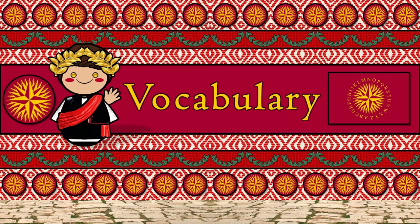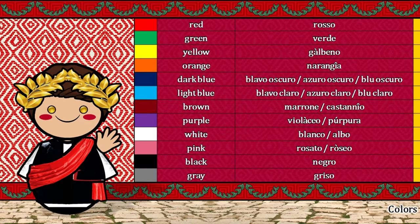Vocabulary — Colors: Rosso. Verde. Galbeno. Naranja. Plavo oscuro. Azuro oscuro. Blu oscuro. Blavo claro. Azuro claro. Blu claro. Marrone. Castaño. Violaceo. Púrpura. Blanco. Albo. Rosato. Roseo. Negro. Griso.